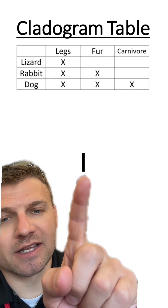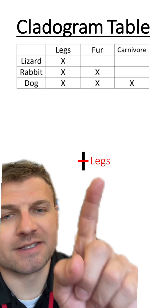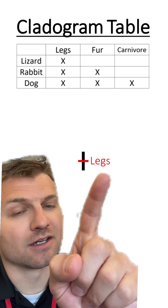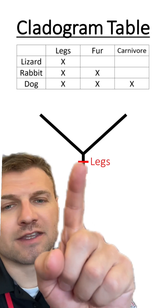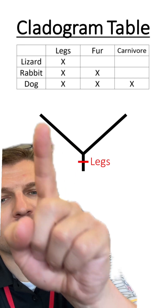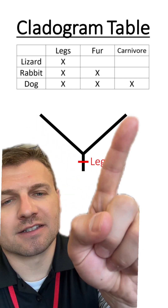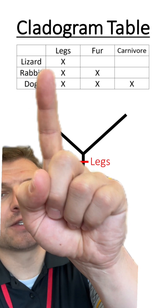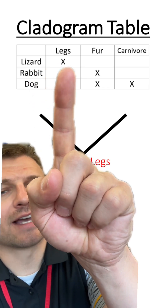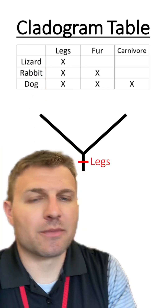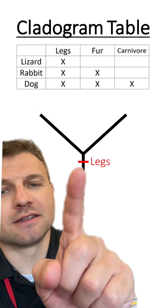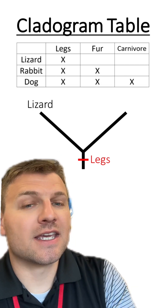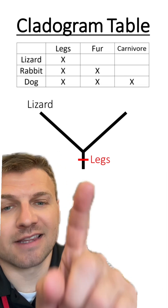I'm going to draw my line to start out my cladogram. I'm going to place the adaptation of legs here, and then I'm going to make a V. This is showing a speciation event. If we look at our table, the lizard is the only species that only has legs, so I'm going to place the lizard at the top here because it only has legs.